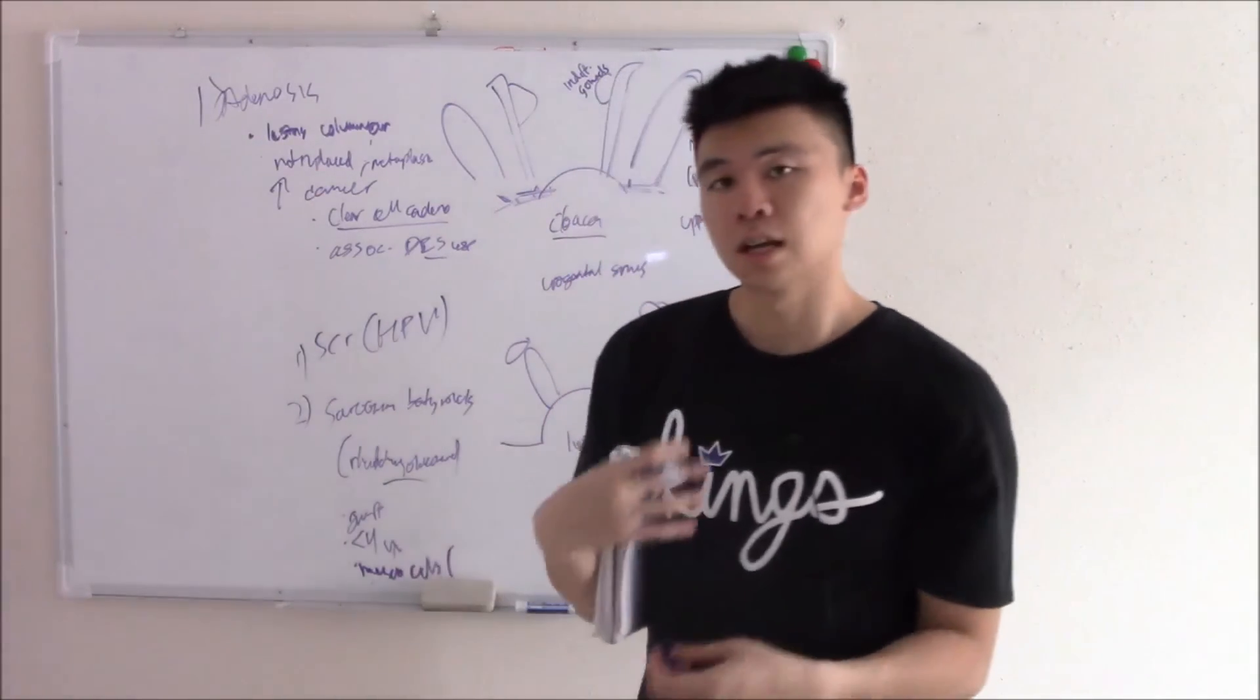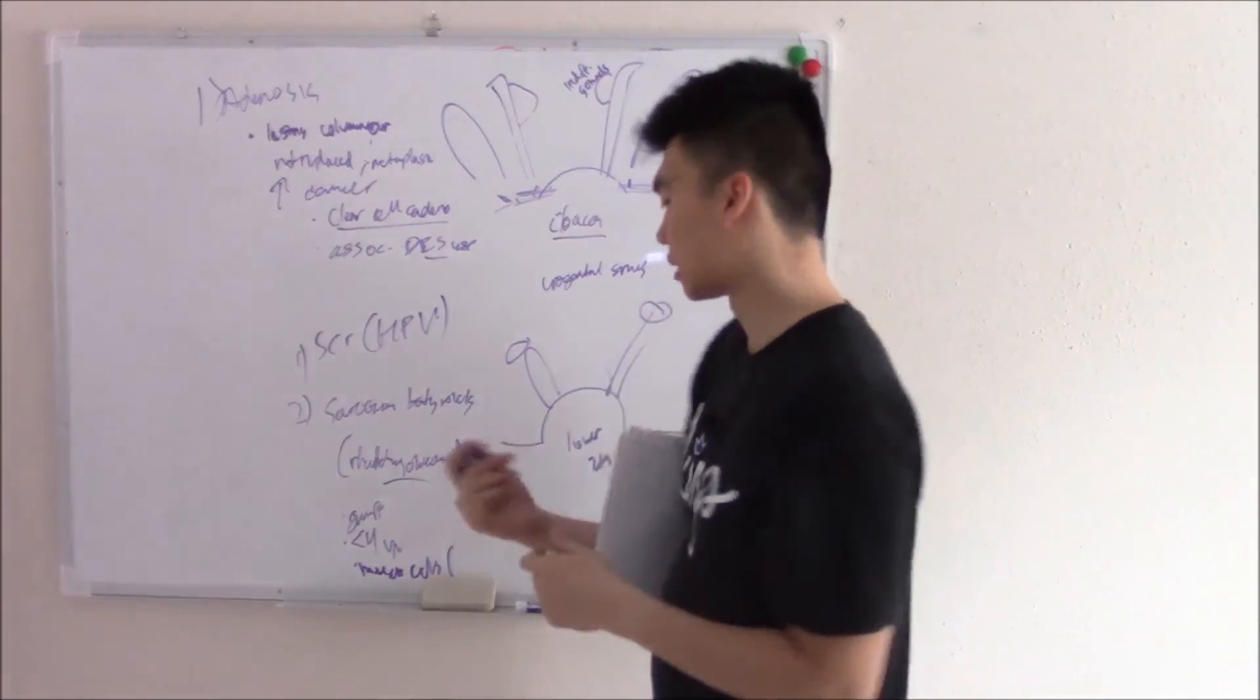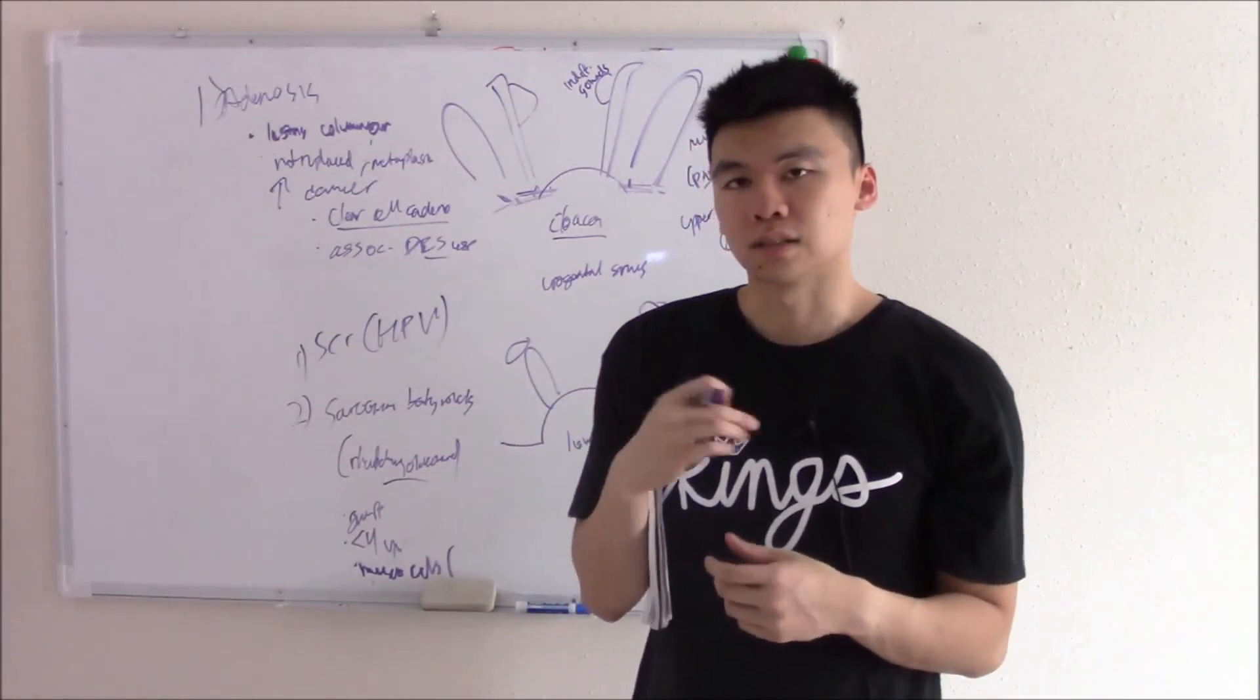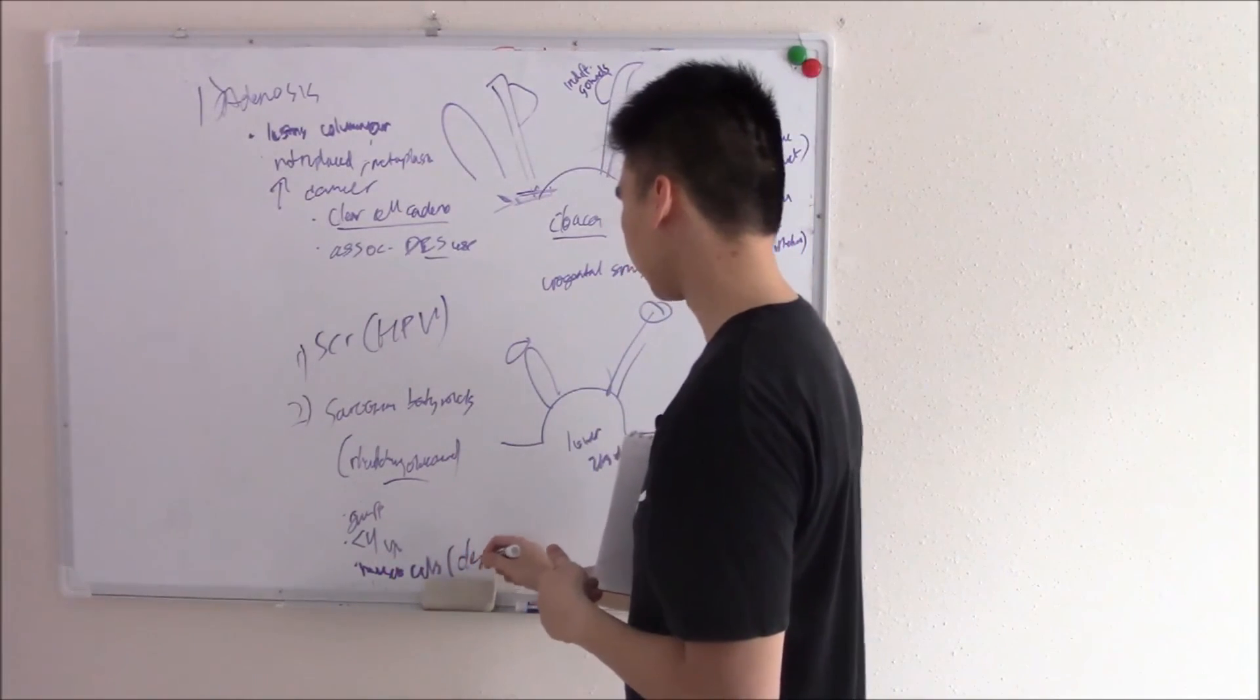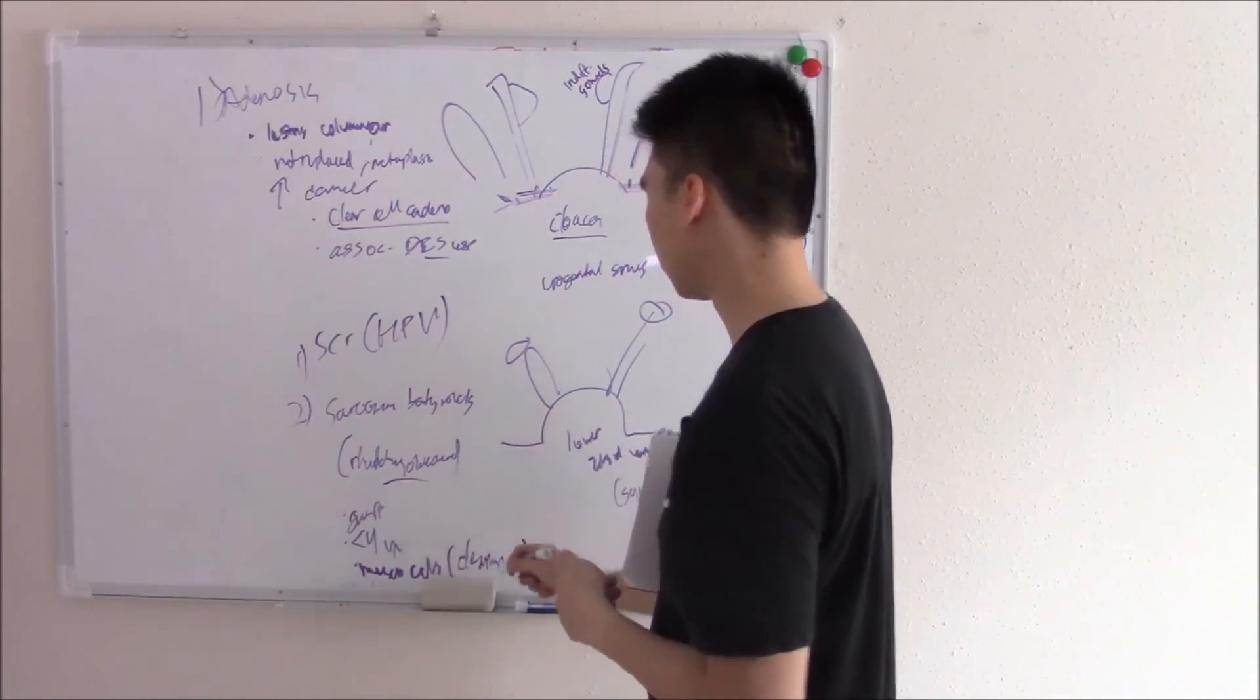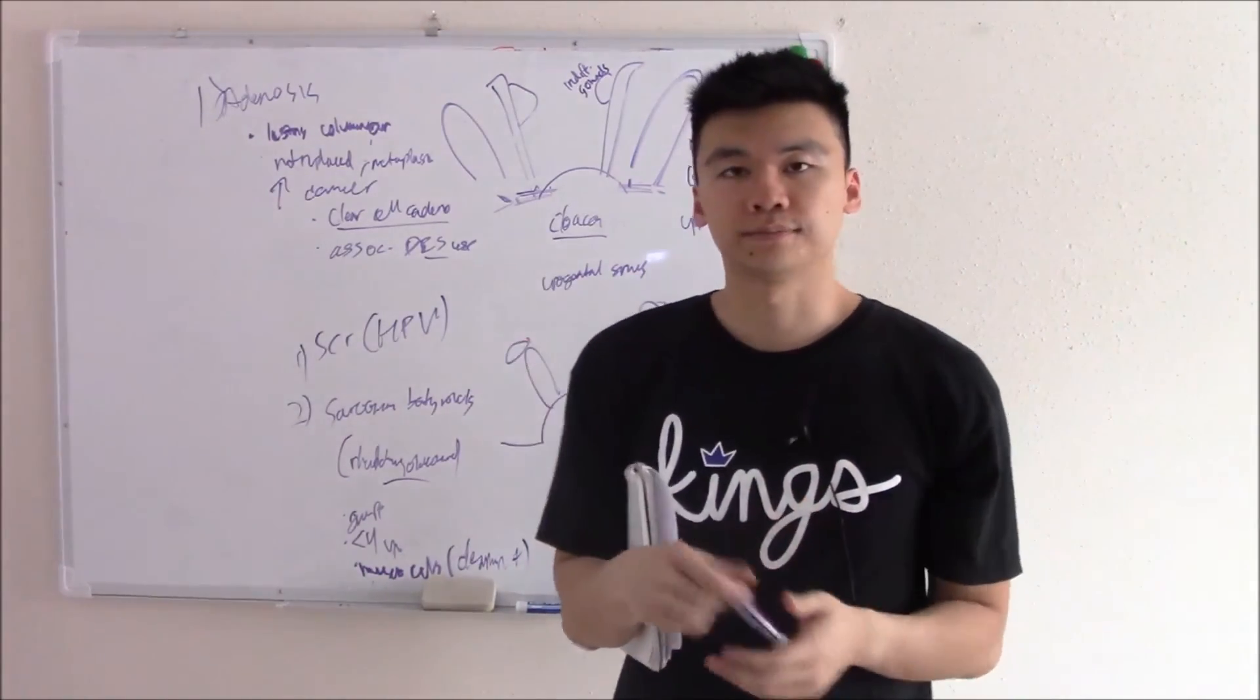Because it's from muscle cells, it stains positive for things like myoglobin. Also, it stains positive for muscle cells' intermediate filament - that's a biochem throwback - that'd be your desmin. So it's desmin positive. That does it for this video. That does it for vaginal pathology. See you next time.